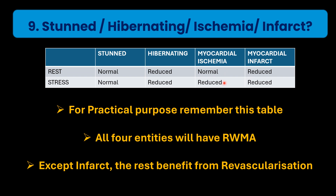In our patient, we saw two areas: in the mid segments, perfusion defects were picked up only on stress — those were areas of myocardial ischemia. At the apex, defects were seen on both rest and stress — that is basically an infarcted area corresponding to the LGE images. So the same patient can have areas of myocardial ischemia picked up only on stress perfusion, and myocardial infarct picked up on stress images.